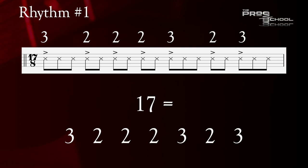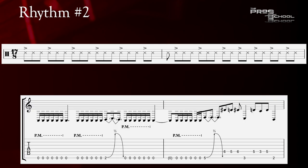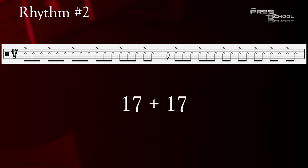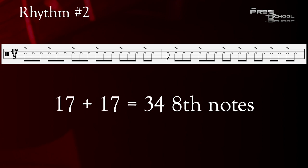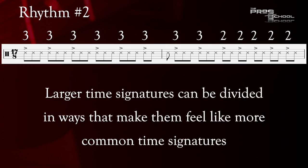Rhythm number two is this. In this one, I'm combining two measures of 17/8 together, which is a total of 34 eighth notes and subdividing that up. It's eight groups of three and five groups of two. Basically, what you get feels like two bars of 12/8, the groups of three, and one bar of 5/4, the groups of two. With a larger time signature like 17, it can be divided in ways that make it feel more like a common time signature, 12/8 and 5/4 in this case, especially if I'm using two measures of 17.